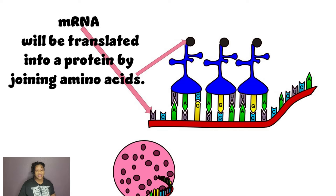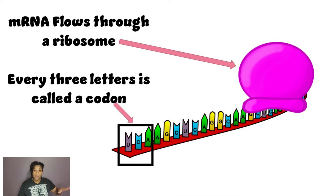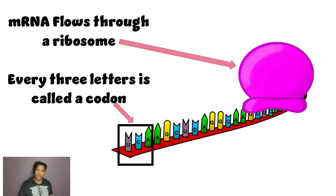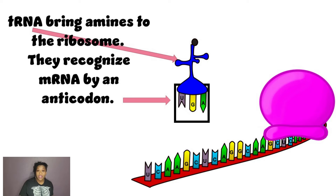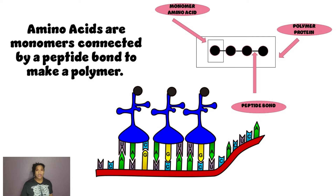After transcription is translation. This process happens in the cytoplasm. mRNA will be translated into a protein by joining amino acids. mRNA flows through a ribosome, and every three letters is called a codon. Transfer RNA brings amino acids to the ribosome — they recognize the mRNA by an anticodon.